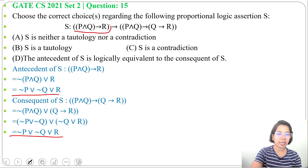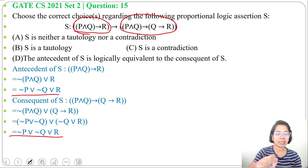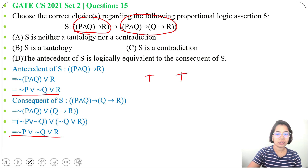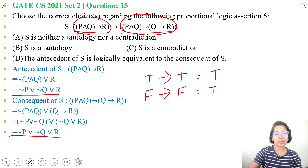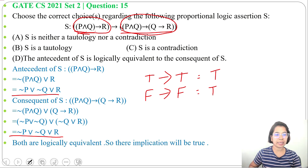So P∧Q→R (the antecedent) is logically equivalent to P∧Q→(Q→R) (the consequent). When both are equivalent, their truth values are the same. So when the left side is true, the right side is also true — true implies true, which is true. When the left side is false, the right side is also false — false implies false, which is true. So the whole implication is a tautology.